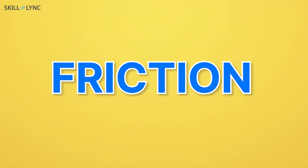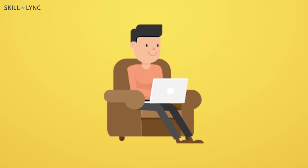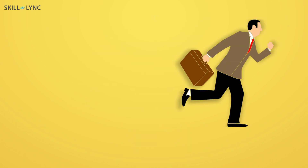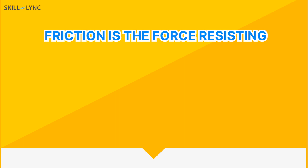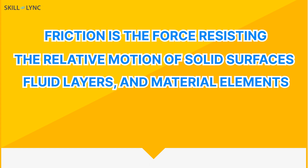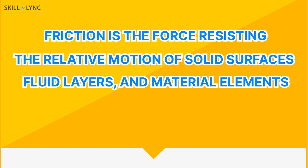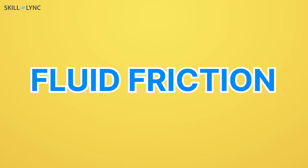The reason behind this is friction. Friction is a very important phenomenon which is present everywhere. It's the reason why you're able to sit on your couch, walk, run, and even the phone that you're watching this video on is in your hands because of friction. Friction is the force resisting the relative motion of solid surfaces, fluid layers, and material elements sliding against each other. There are two major types of friction: dry friction and fluid friction.